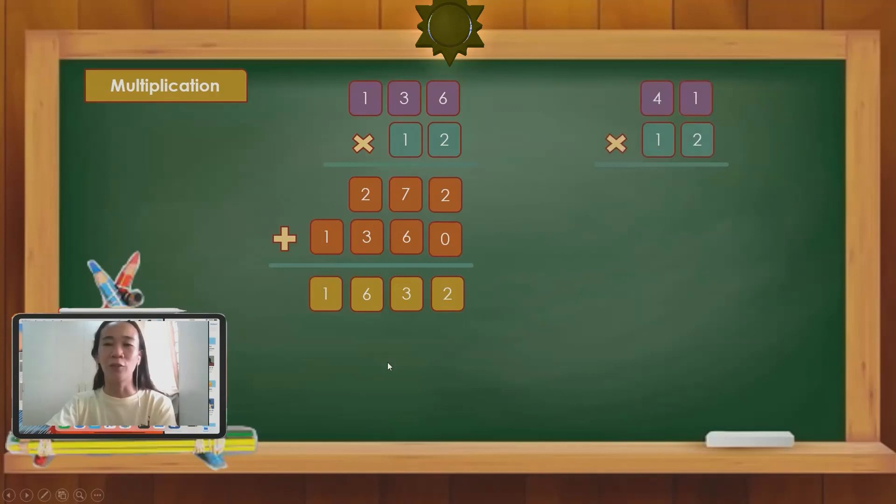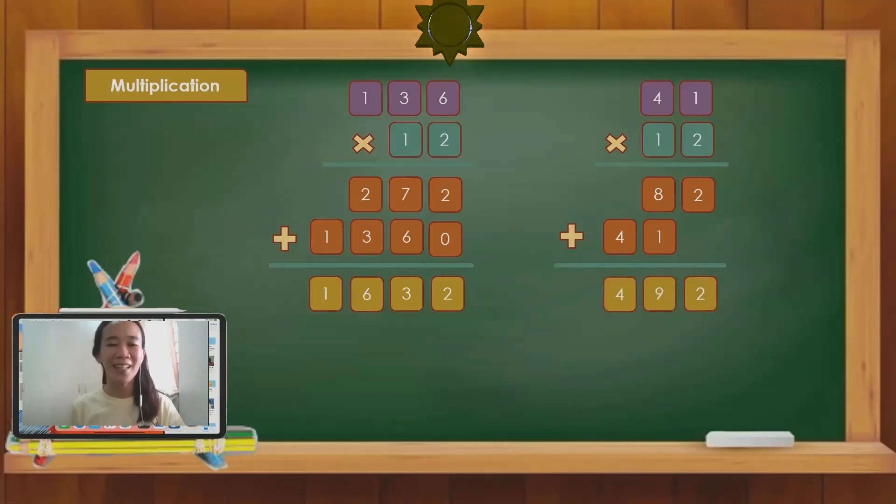One more example. 41 times 12. What's your answer here, Gwadans? If your answer is 492, then you are very intelligent, Gwadans. Because 41 times 12 is 492. Let us check. 2 times 1 is 2. 2 times 4 is 8. 1 times 1 is 1. 1 times 4 is 4. Then we will add the partial products. That will be 2 plus 0, 2. 8 plus 1, 9. And bring down 4. So our answer is 492.